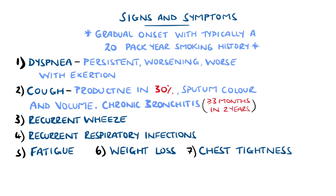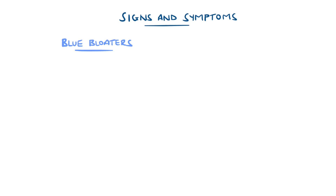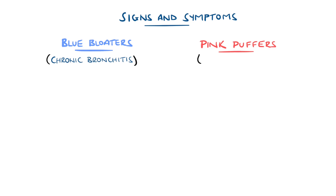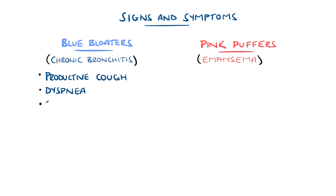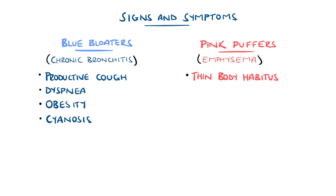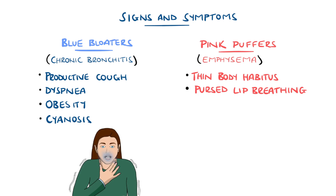A classic description of the two main phenotypes in COPD is the blue bloaters and pink puffers, to describe chronic bronchitis and emphysema. Blue bloaters are those with predominantly features of productive cough, dyspnoea, obesity, and cyanosis as a result of reduced oxygen levels in the blood. Pink puffers are characterised by a normal or thin body habitus and pursed lip breathing, that helps prevent the bronchioles from collapsing and so improves ventilation. But in reality, remember that most patients have an overlap of both.